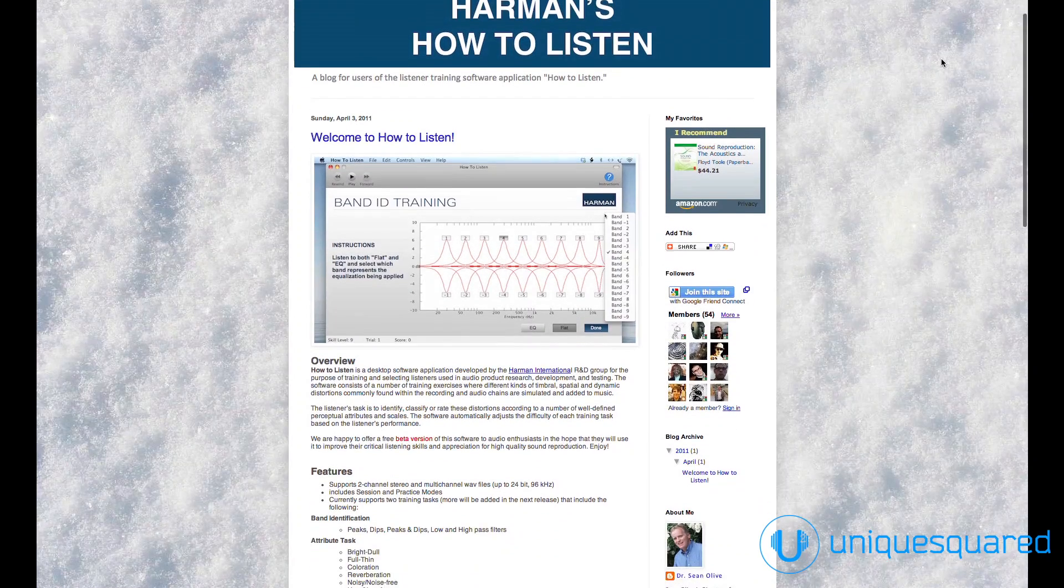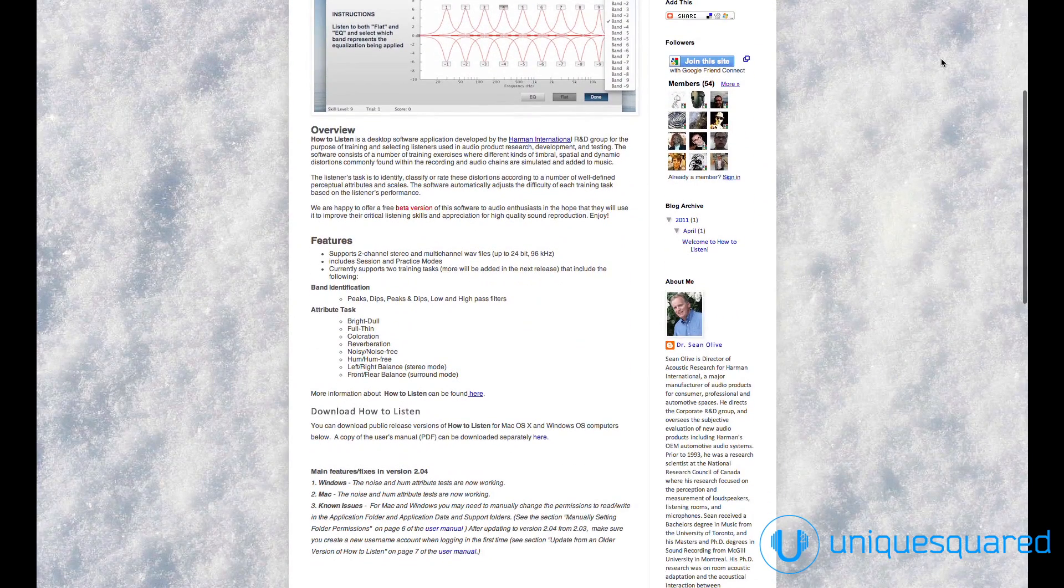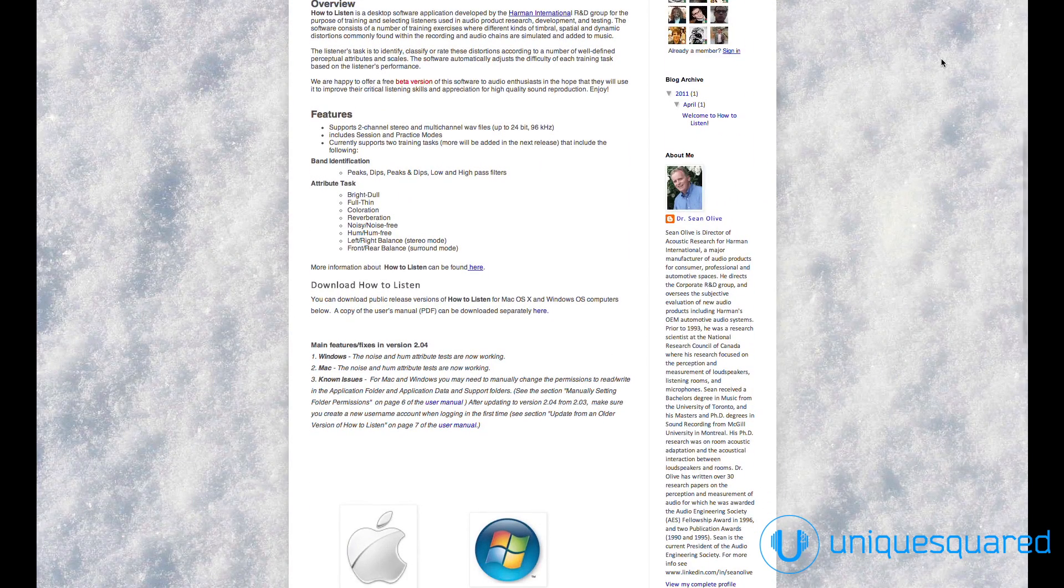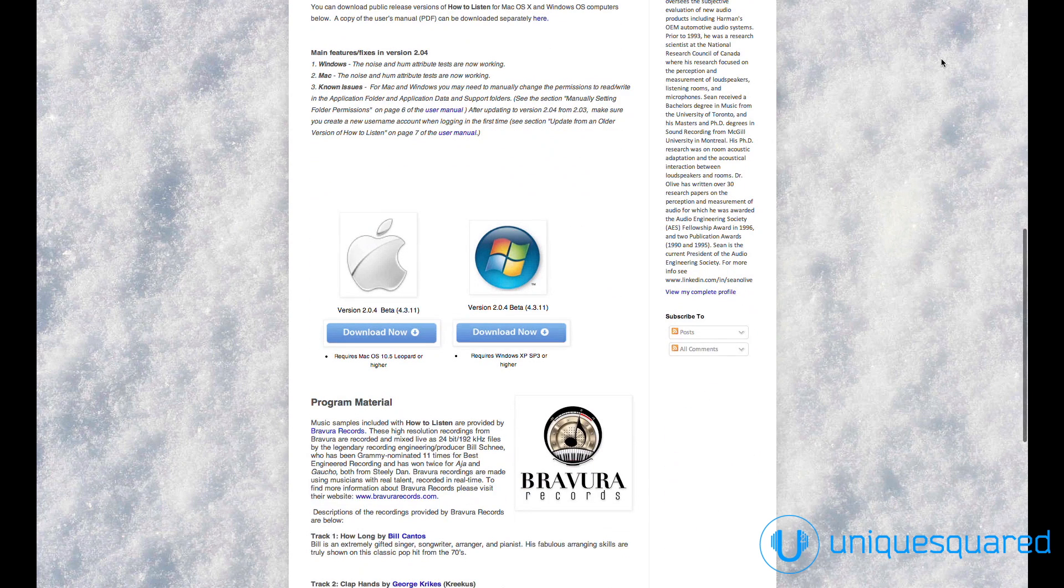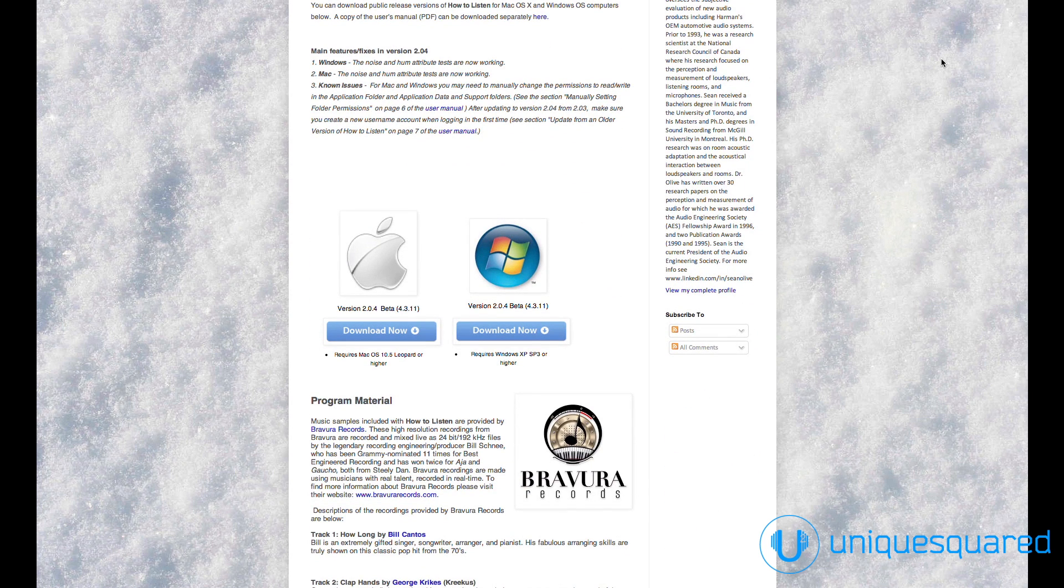So what we've done is we've developed our own training process. It's called How to Listen. It's a piece of software we developed. And each listener undergoes several weeks of training where they learn how to identify and describe different distortions that we simulate and add to loudspeakers. And it gives automatic feedback on the performance. It gets more and more difficult as they progress.